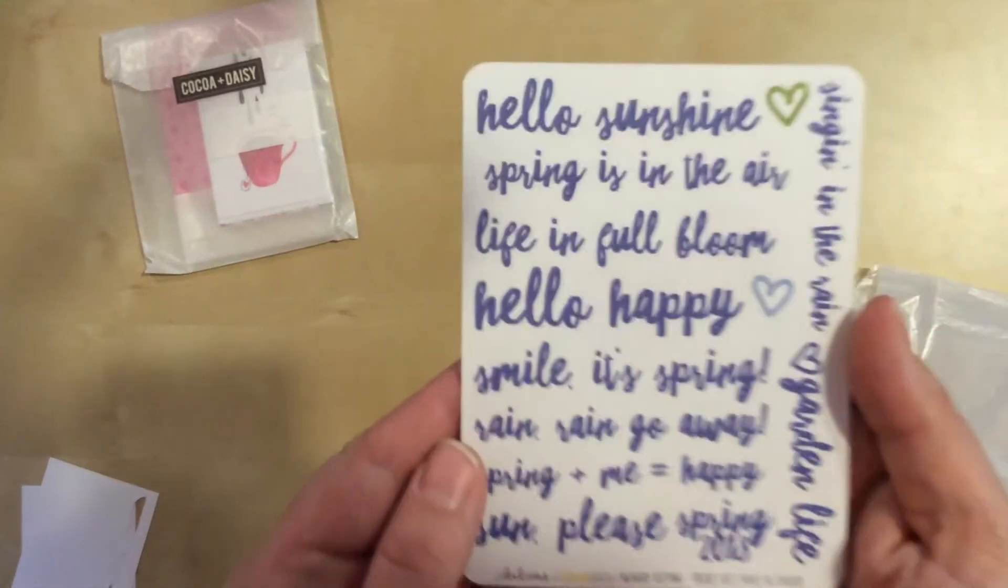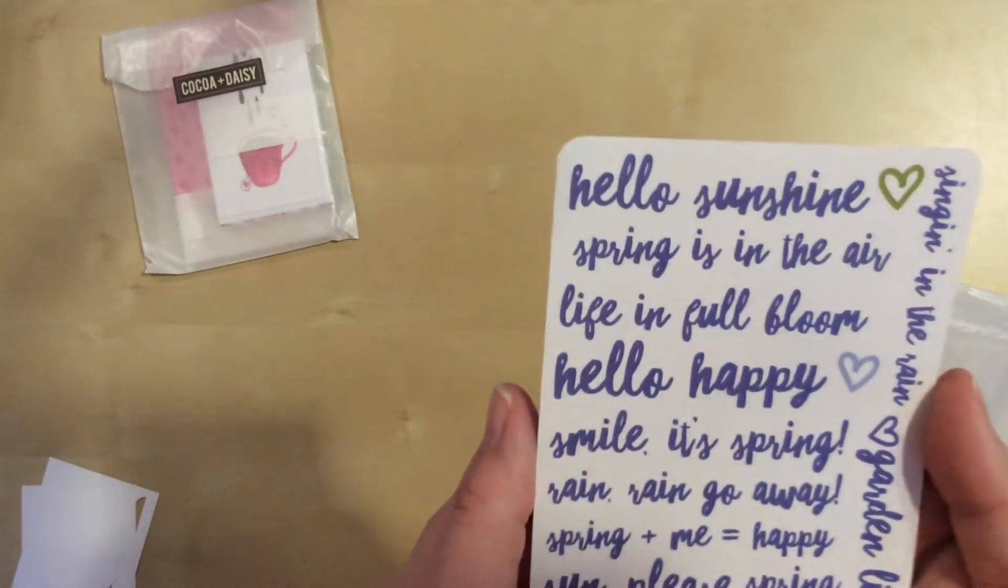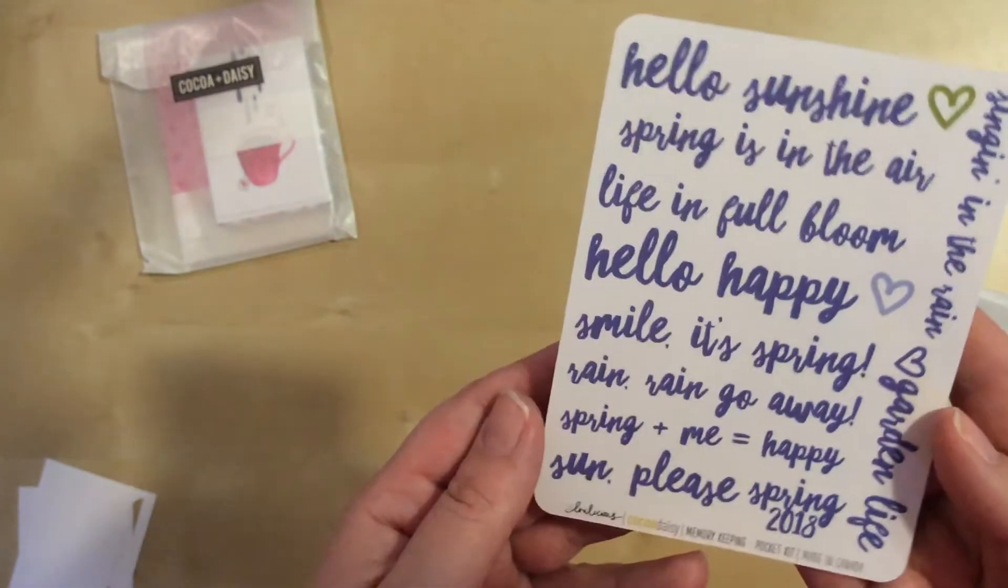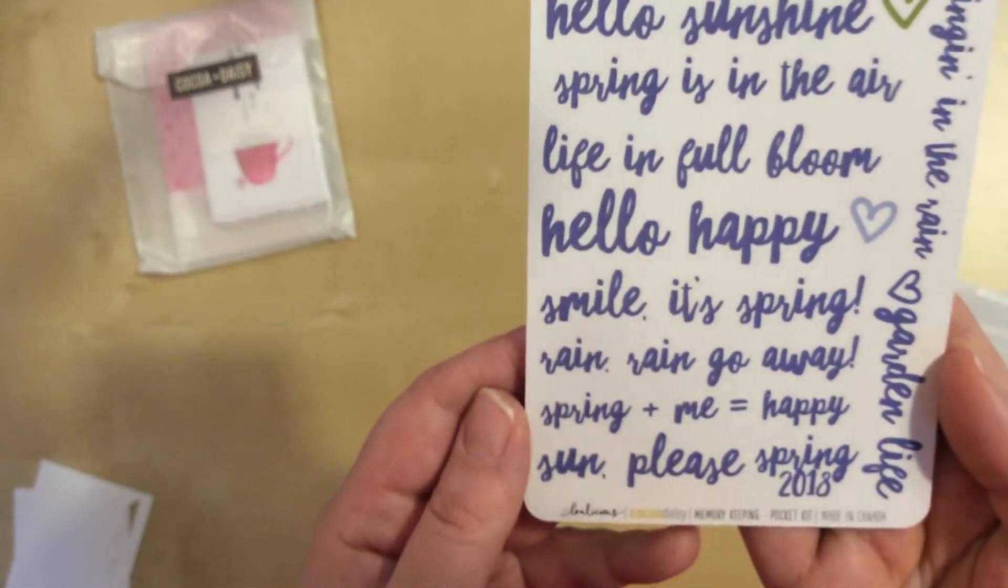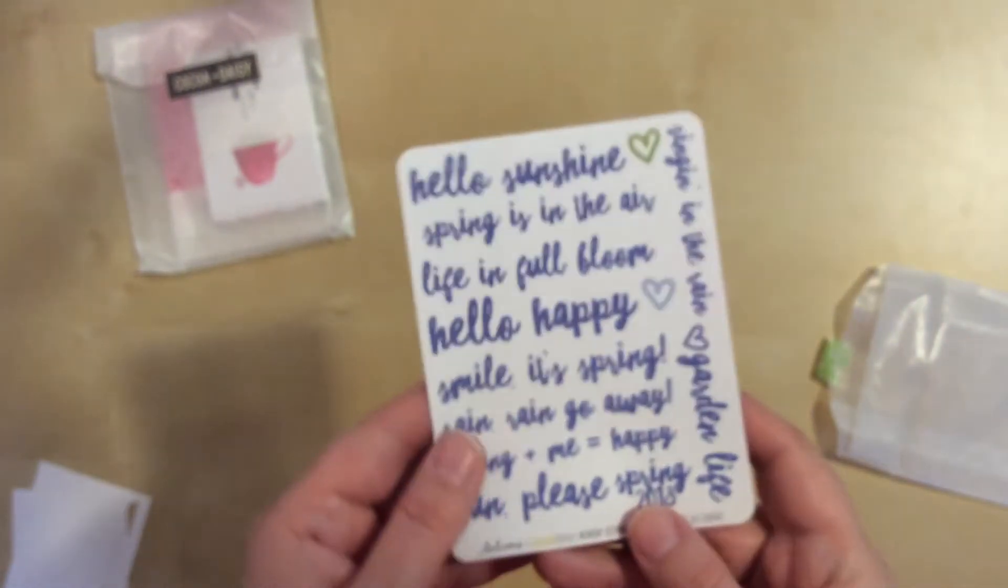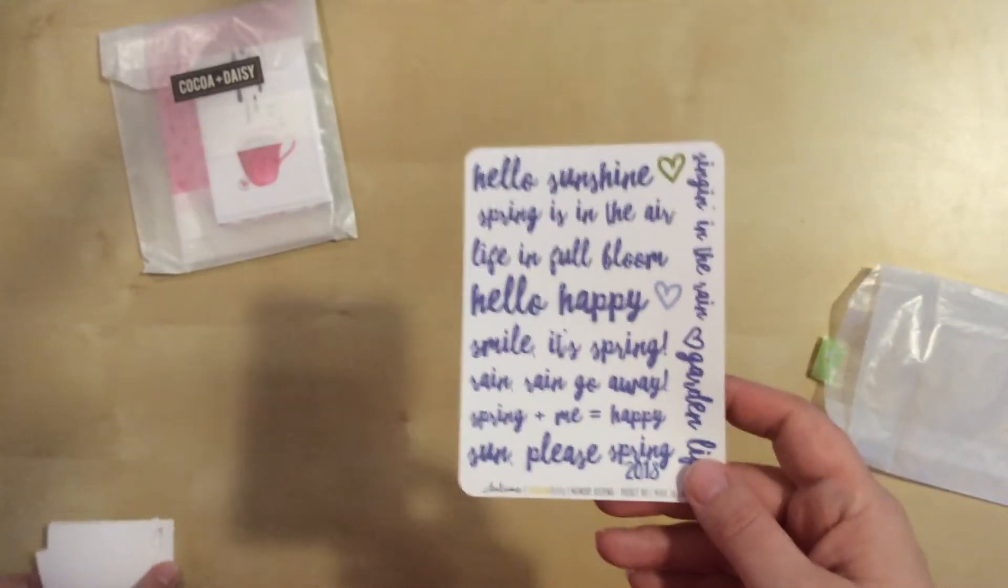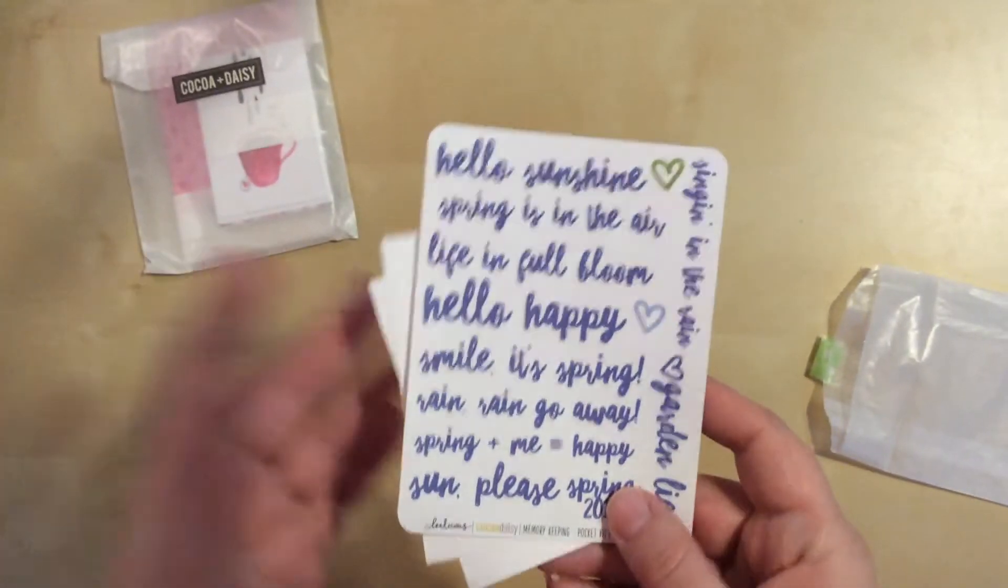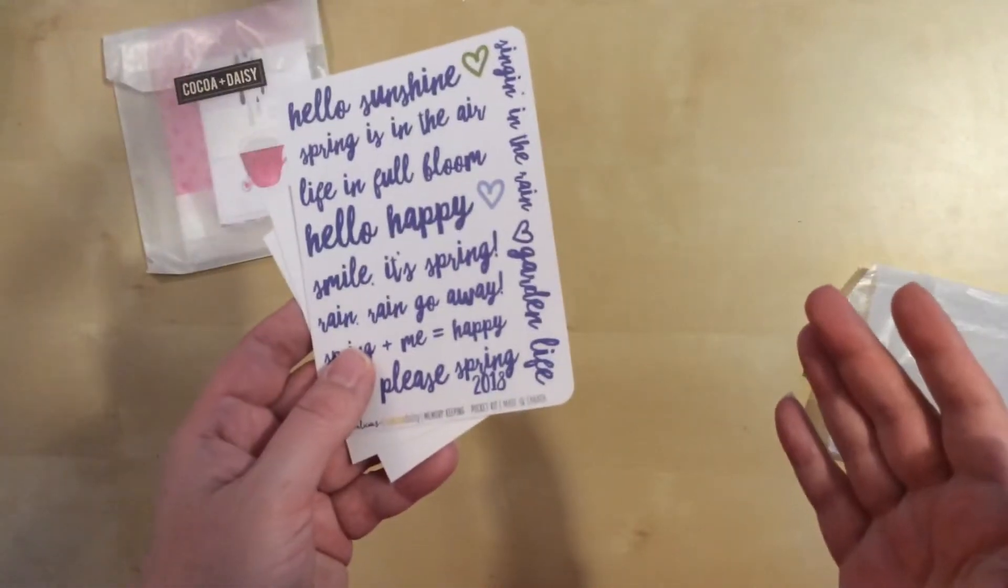Just a little set of stickers with some fun sayings: garden life, singing in the rain, smile it's spring, rain rain go away, sun please. All of these will get used in some way whether it's on a trip or not. I don't have a garden at home, but I go to lots of arboretums and gardens, so I'm sure eventually they'll turn up in my photos somewhere.